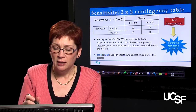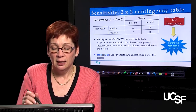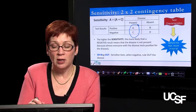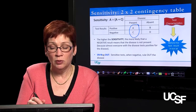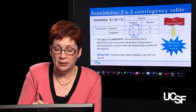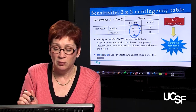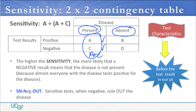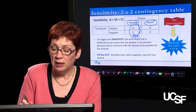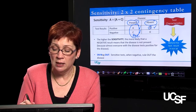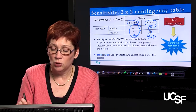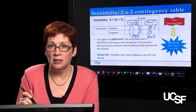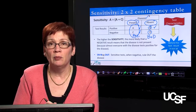Let me orient you to the table. The columns represent disease state. This column represents the population of patients in whom the disease is present — so if you had 1,000 people, the number who have the disease is A plus C; people in box A and box C all have the disease. On the other side, this column represents people in whom the disease is absent — that's B plus D. Some people call this the healthy population, but it's not technically quite right, because they could be free of this disease but not free of all diseases.